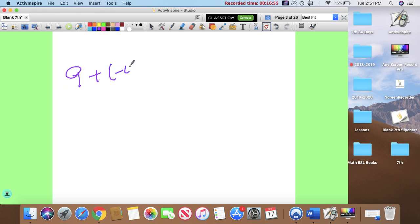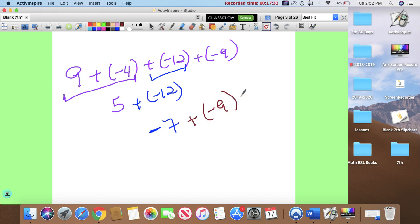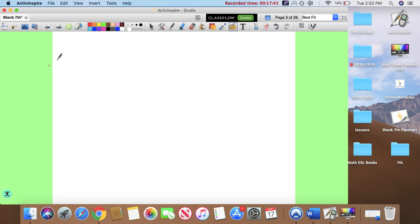Last: nine plus negative four plus negative twelve plus negative nine. Let's do this first. Nine plus negative four. More positive. Nine minus four is five. So five positive. Now let's do this. Plus negative twelve. Five plus negative twelve. More negative. Más negativos. So you get negative seven. Plus negative nine. Negative and negative. Six plus nine is fifteen. Negative fifteen.